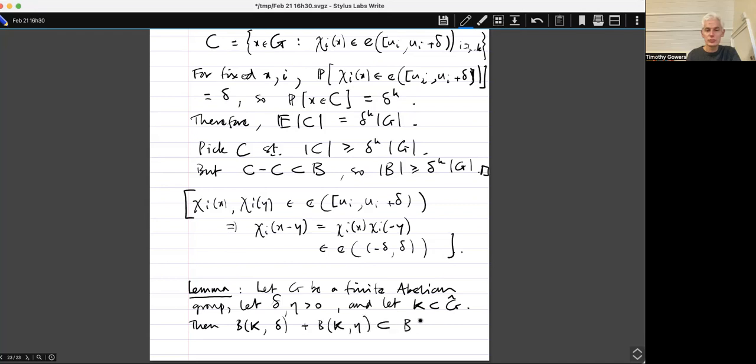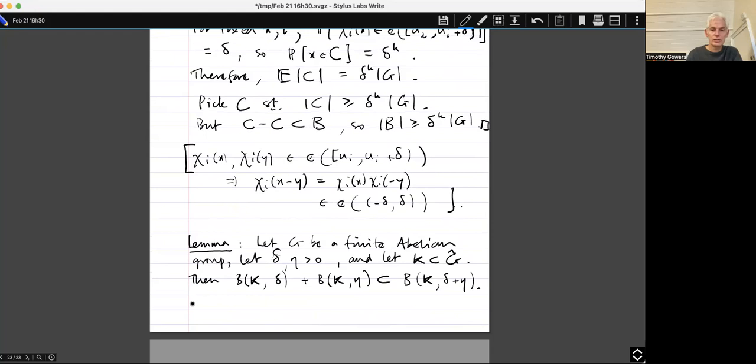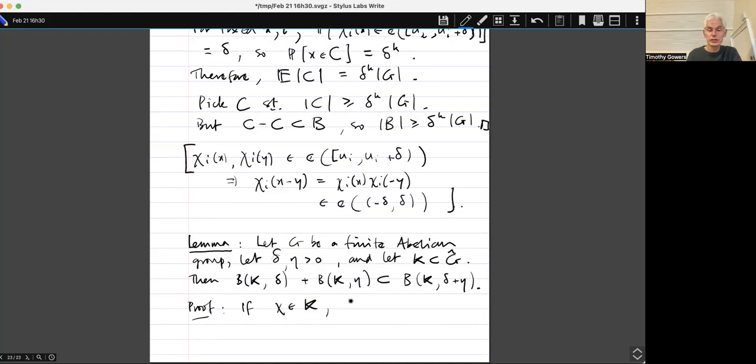Then the Bohr set B K delta plus the Bohr set B K Eta is a subset of the Bohr set B K delta plus Eta. And, well, proof. If Chi belongs to K and X belongs to B K delta and Y belongs to B K Eta, then